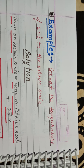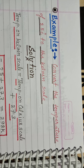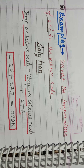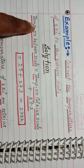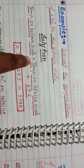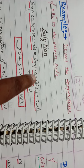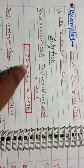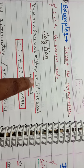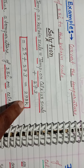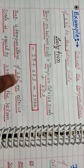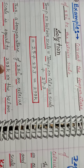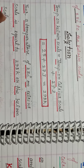For example, convert 25 degree centigrade to Kelvin scale. Temperature on Kelvin scale equals temperature on Celsius scale plus 273. Celsius scale par 25 diya hua hai, plus 273, so the temperature of 25 degree centigrade on Celsius scale is equal to 298 Kelvin.